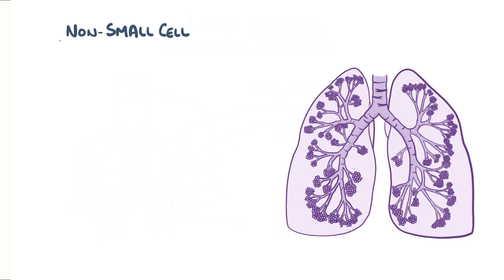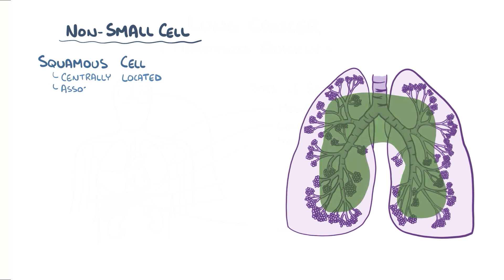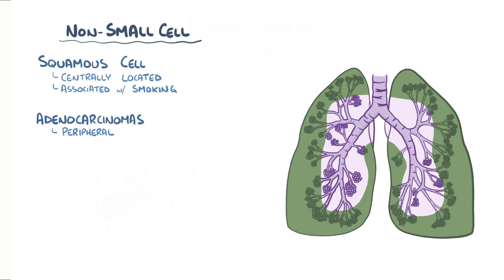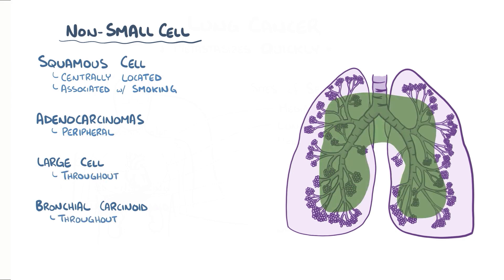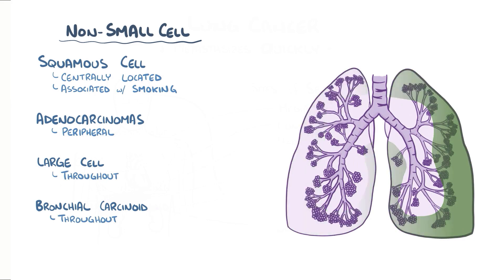Non-small cell carcinomas are more of a mixed bag in terms of where they usually arise. Just like small cell carcinomas, squamous cell carcinoma tends to be centrally located and has a strong association with smoking. Smoking also increases the risk of adenocarcinomas, but they tend to develop peripherally, in a bronchial or alveolar wall. Large cell carcinomas and bronchial carcinoid tumors can be found throughout the lungs — centrally and peripherally — though large cell carcinoma has a stronger link to smoking.